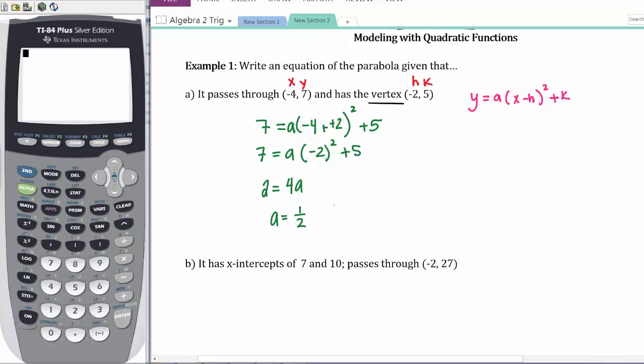Once you have a, you have all the necessary information to write the general equation of a parabola. So that would be y = ½(x + 2)² + 5. That's my final answer in vertex form.